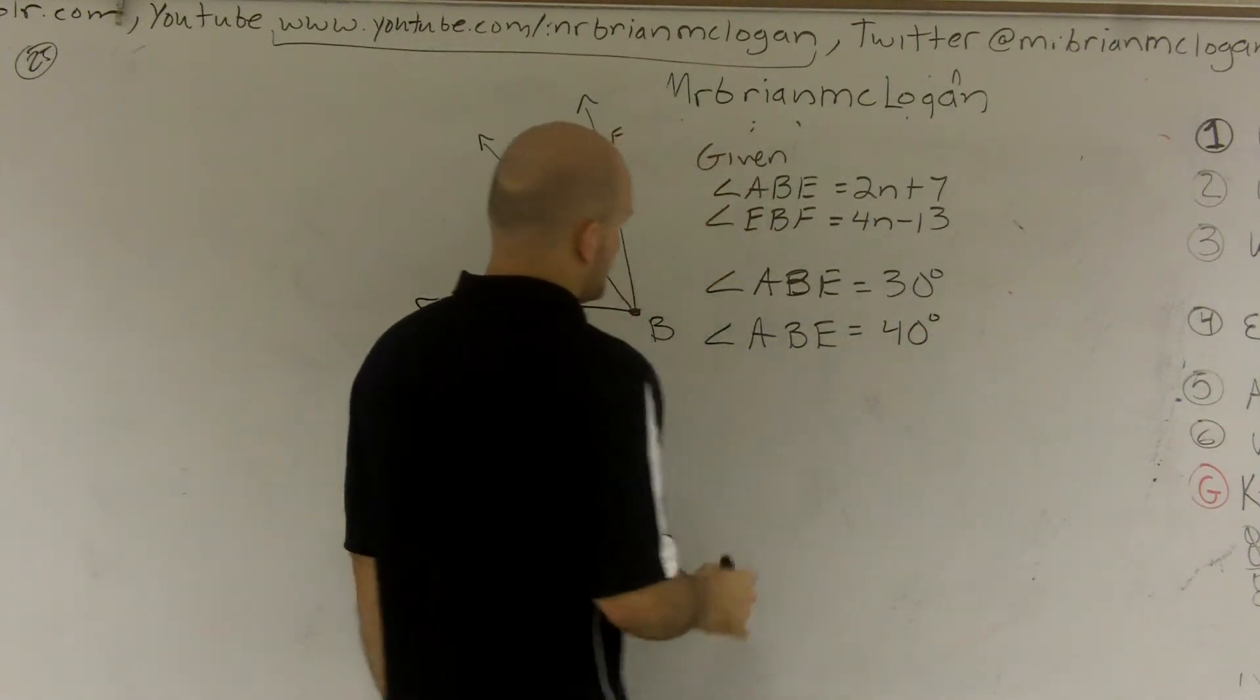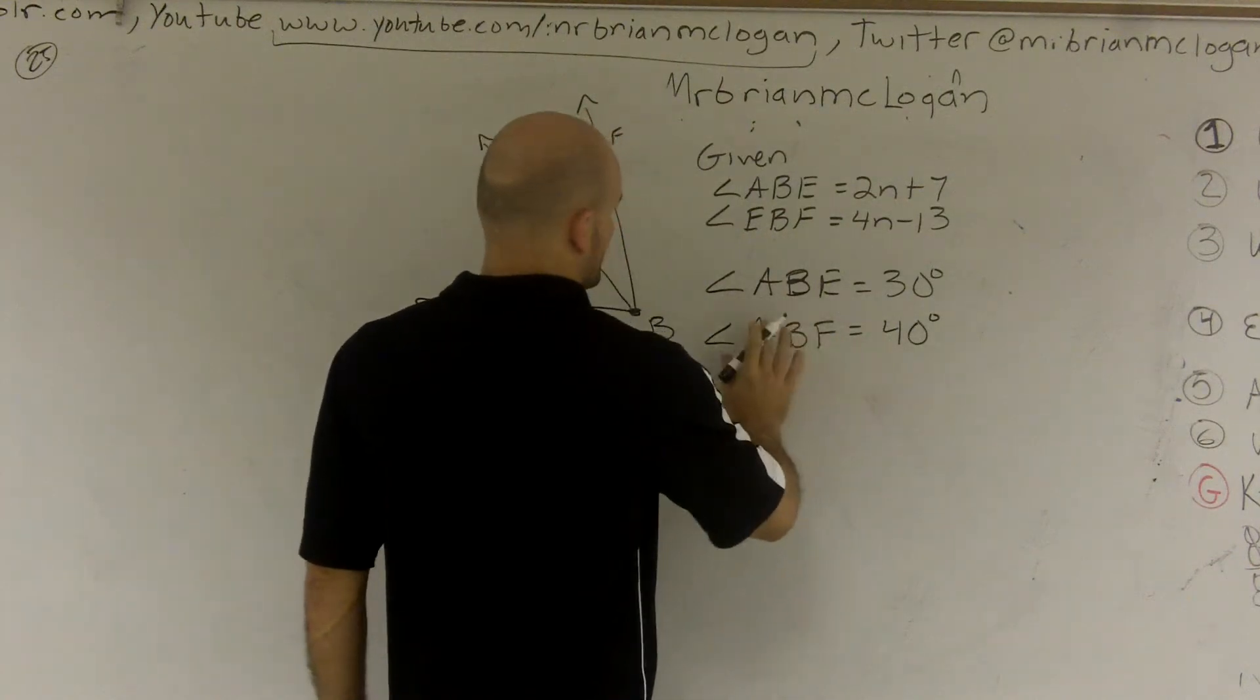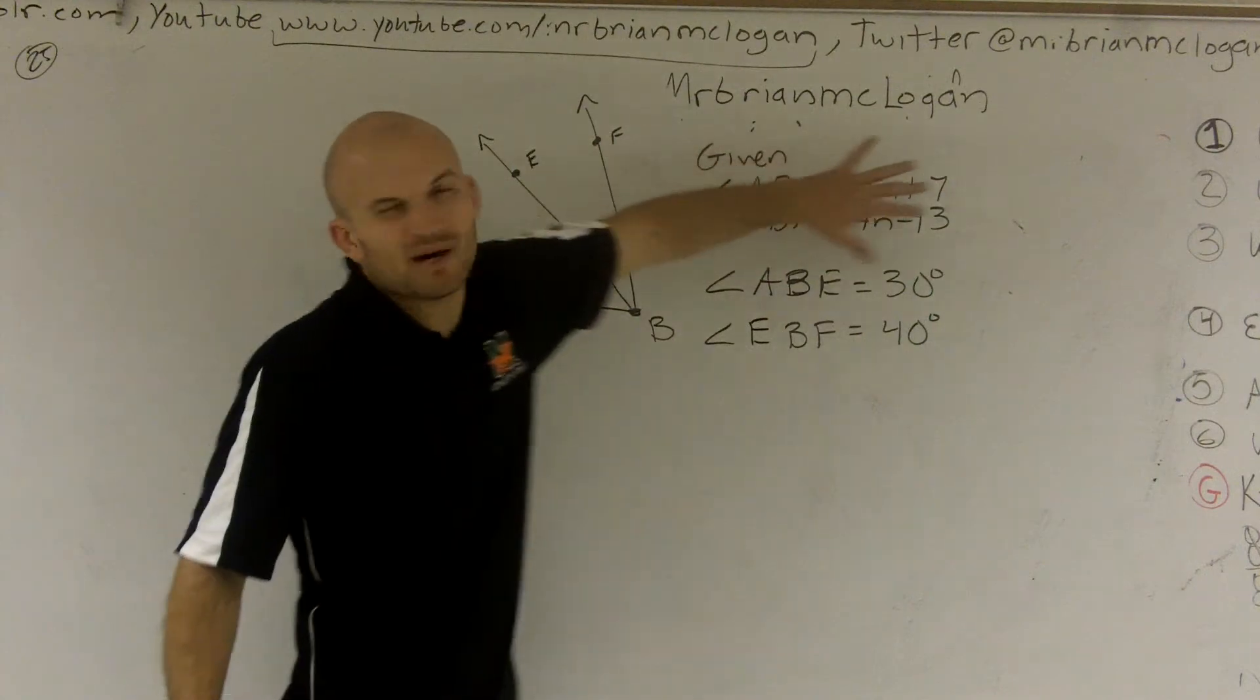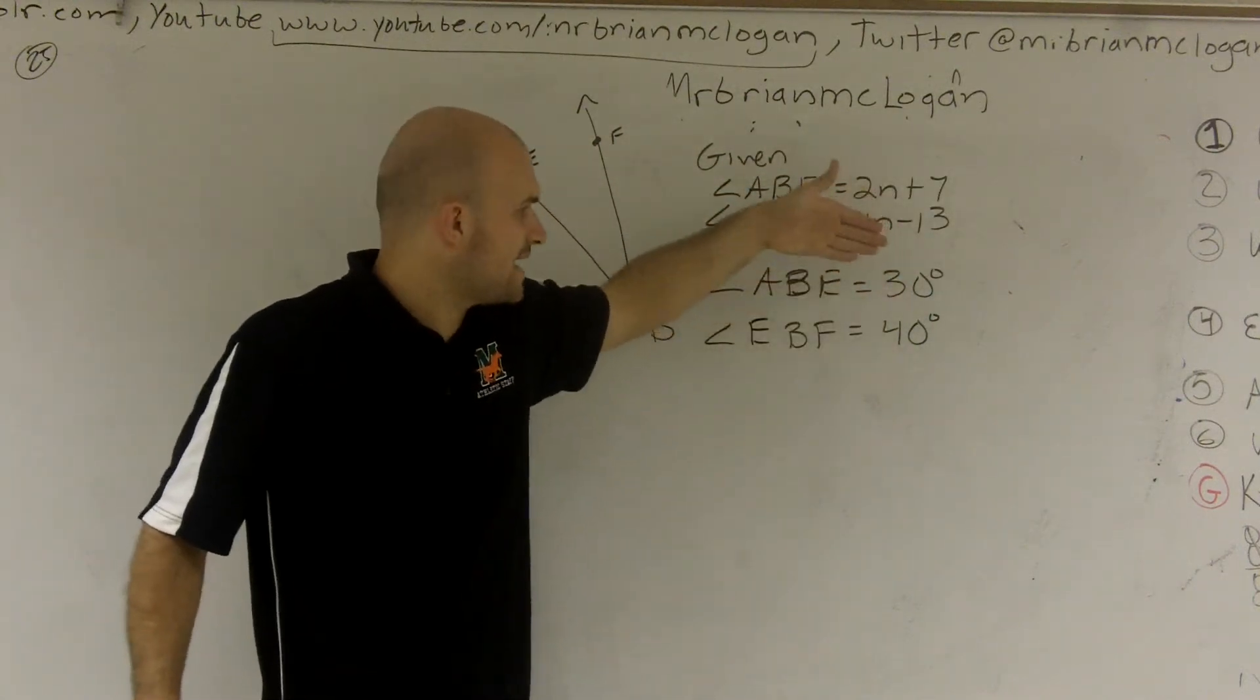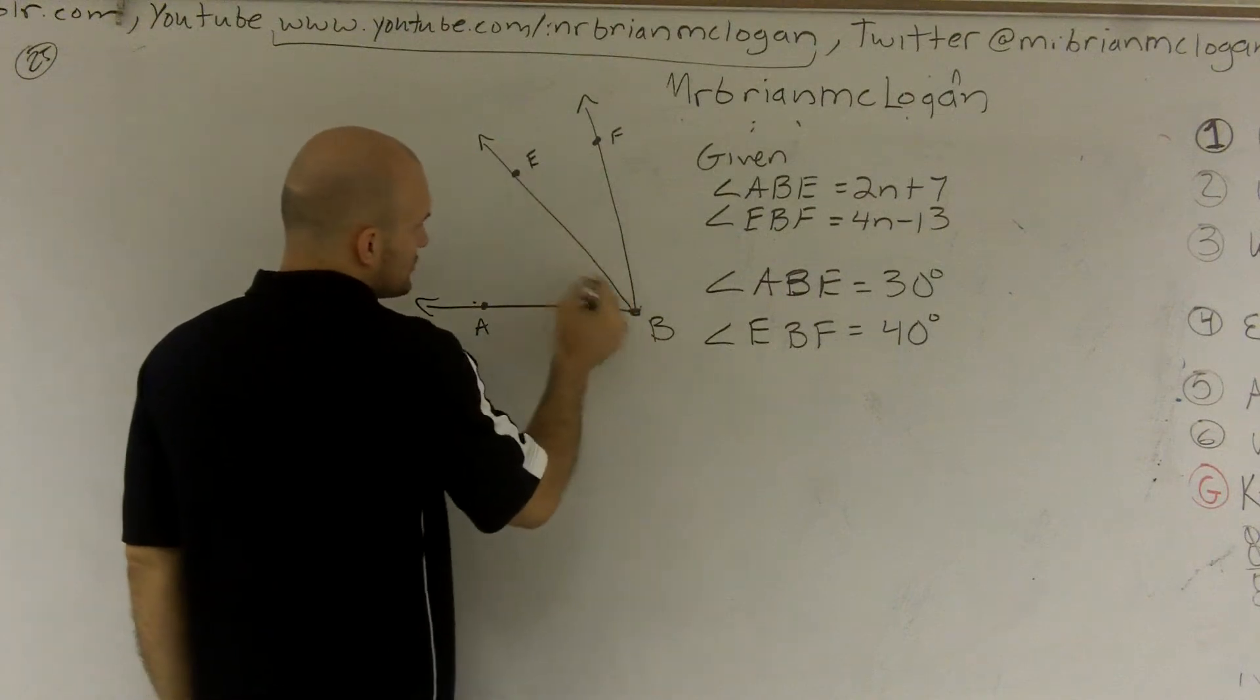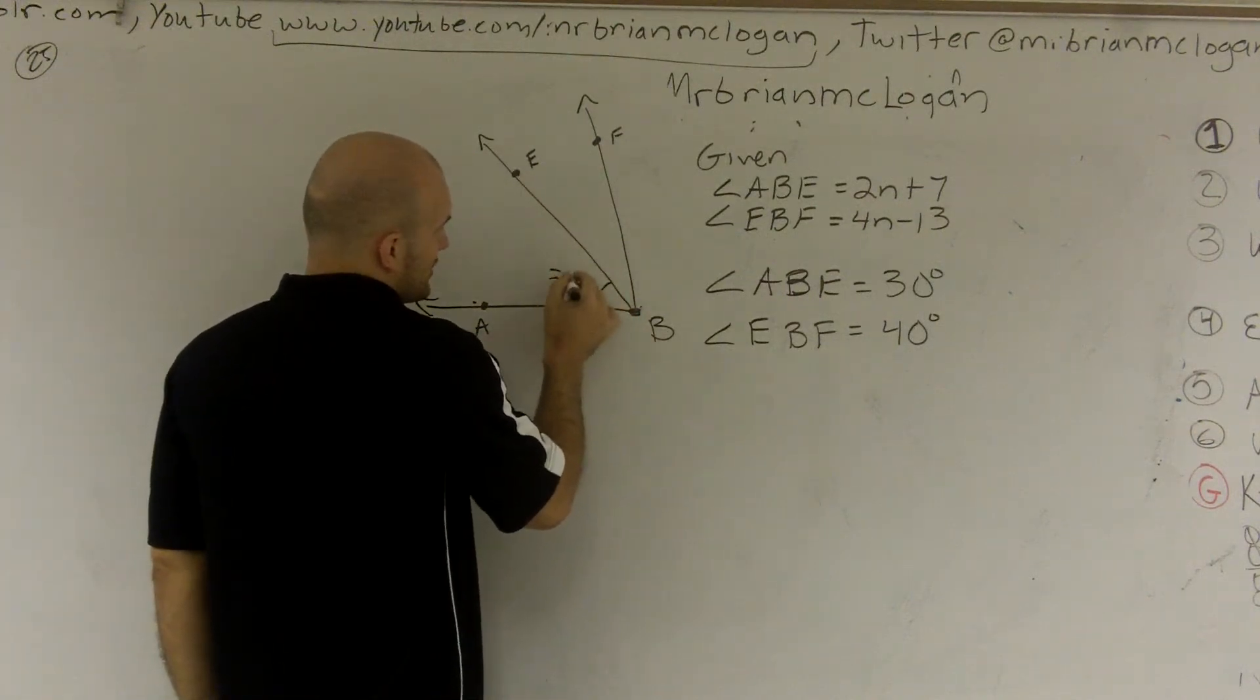All right? A, B, F, or E, B, F. Let's look at it this way. Let's forget about this. Let's just look at, let's just say I say A, B, E. So A to B to E was equal to, that angle is 30 degrees.